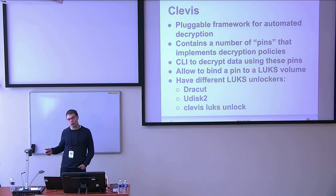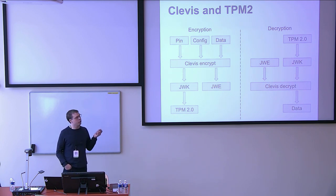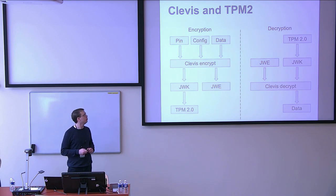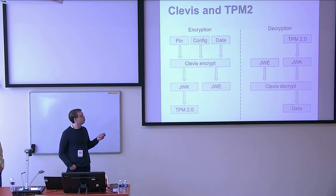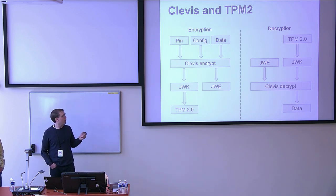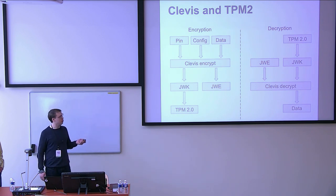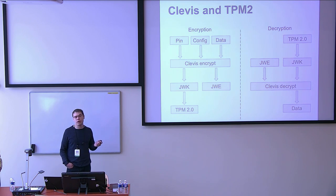Here's how Clevis works. You provide data to encrypt, a pin — for example, TPM — and a configuration. Clevis has reasonable defaults, but every pin has its own configuration if you want to tweak parameters. Clevis generates a JSON web key used to encrypt the data, and the encrypted information plus information on how to retrieve the key are stored in a JSON web encryption object, with the key protected by the TPM. On decryption, you provide Clevis a JSON web encryption, and it retrieves the key and decrypts the data.